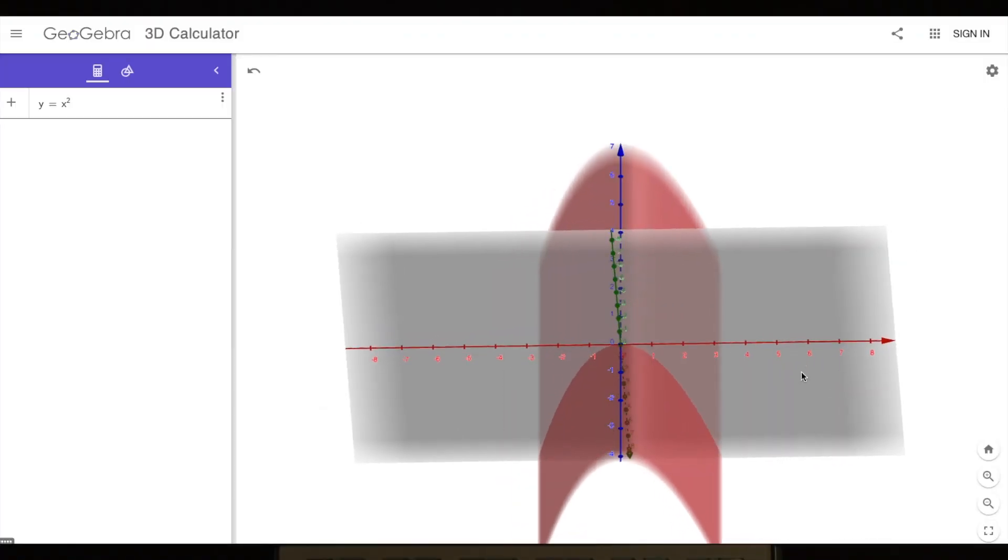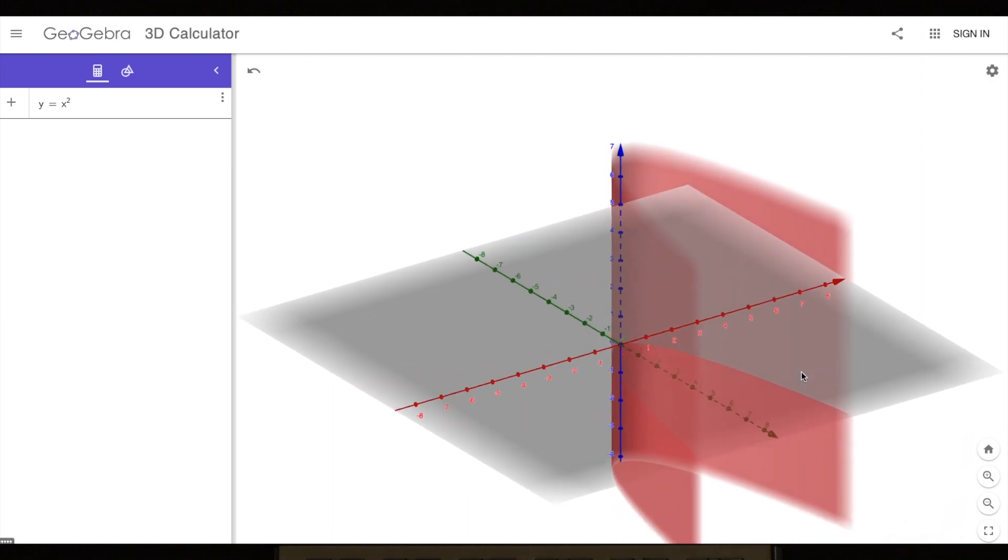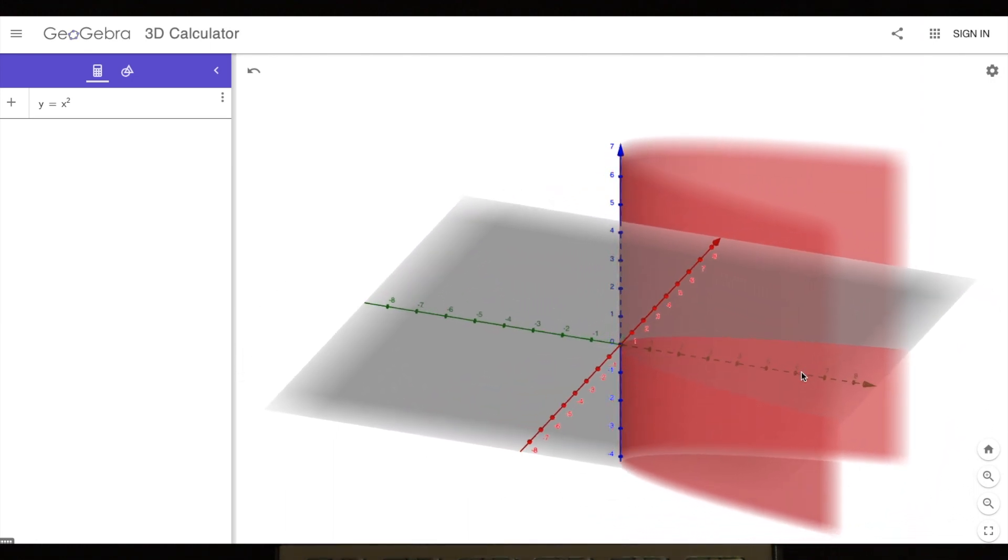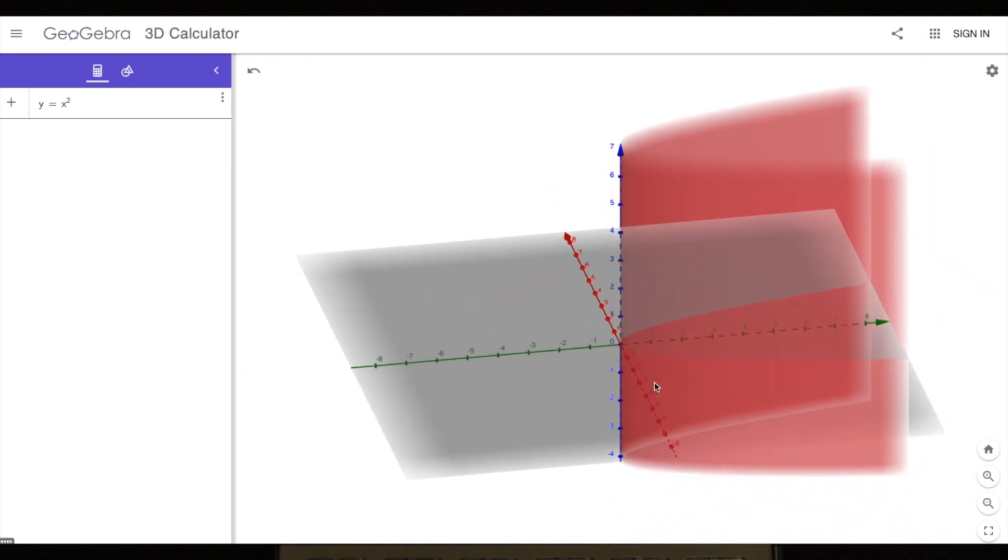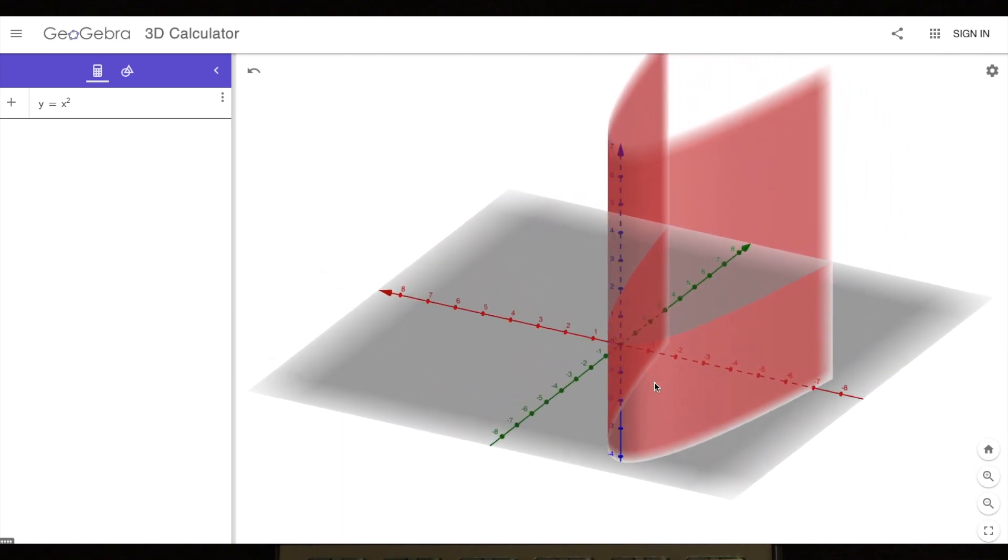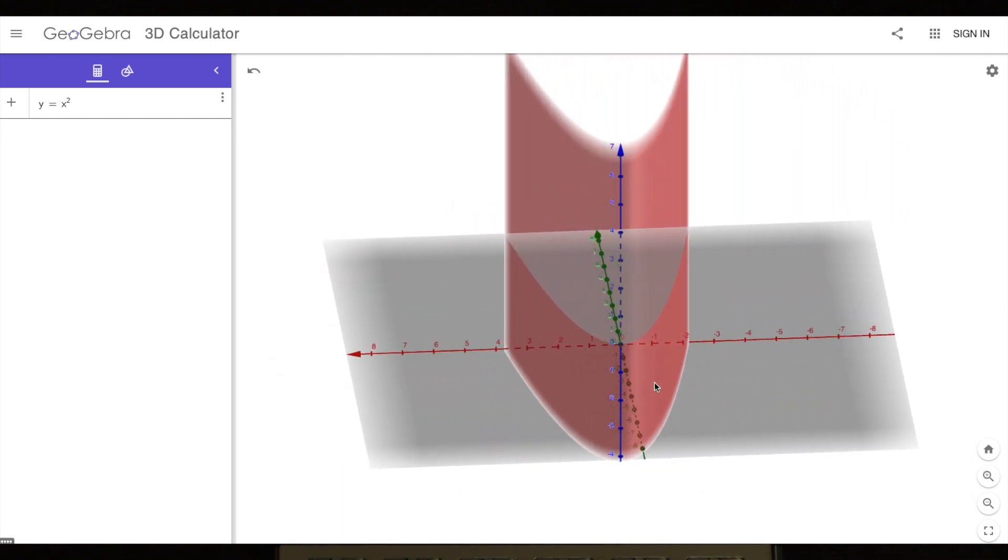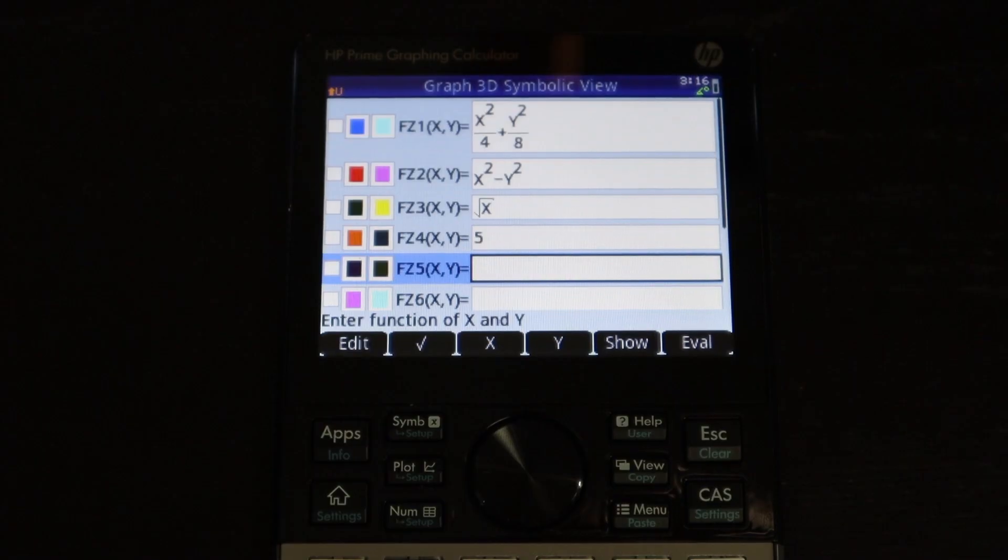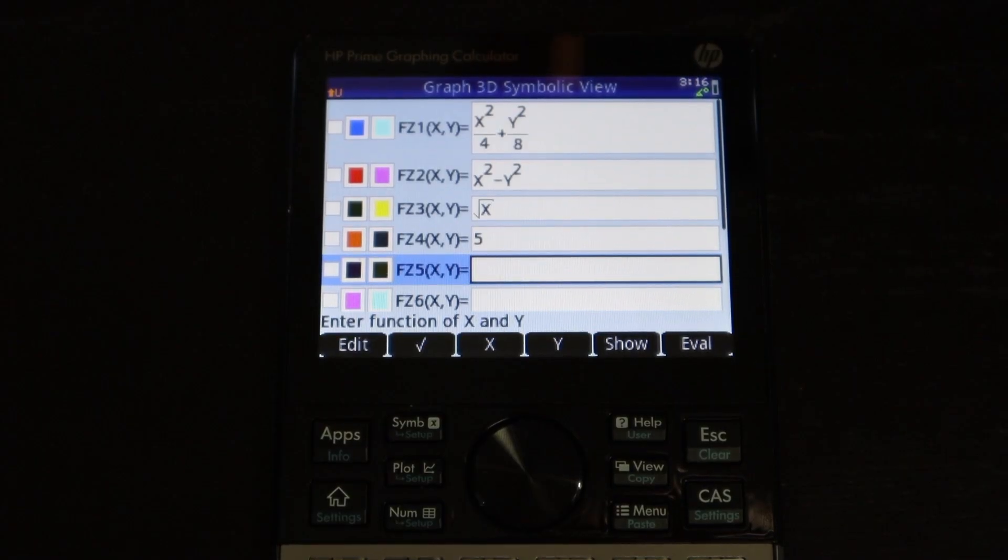So right here I have graphed y equals x squared. You can just see it's a parabola in the x, y plane that extends up and down on the z-axis. You can't graph that on the HP Prime either using the basic 3D graphing app. So just keep that in mind. Those are a few things that it cannot do, even though there are websites out there that will graph functions like those and functions that are in those forms.